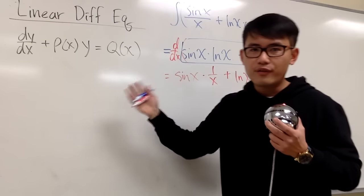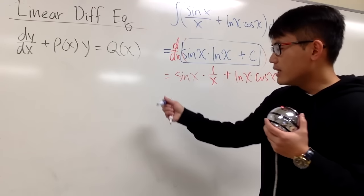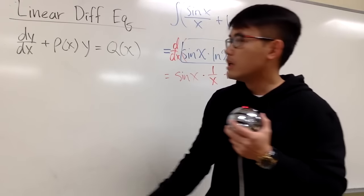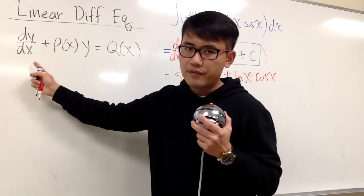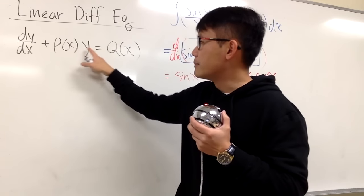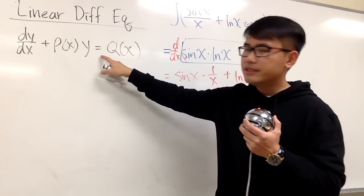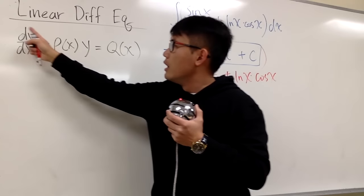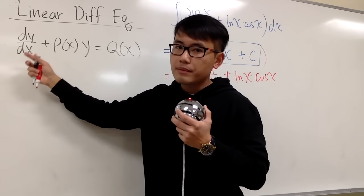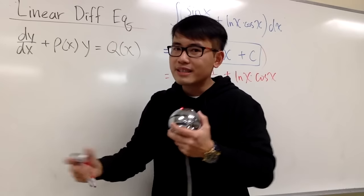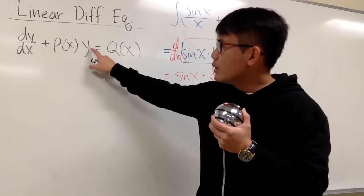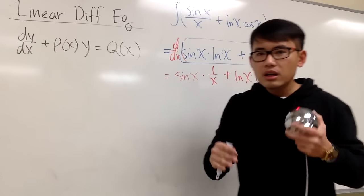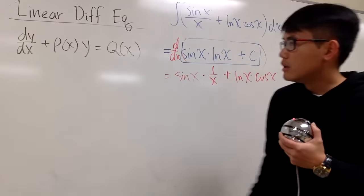Now, why did I bring this up? Let's talk about the linear differential equation. The form you want to begin with is: dy/dx plus another function p(x) times y — where y is a function of x — and everything else on the right-hand side. This is linear because the derivative is just to the first power, not inside a cosine or squared. Likewise, y is only to the first power; if you had y squared, this wouldn't work.